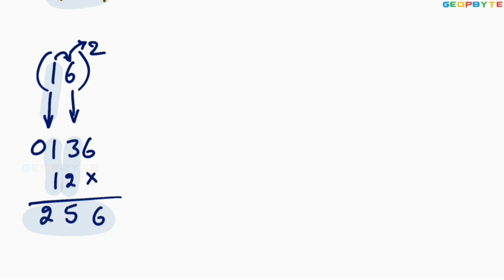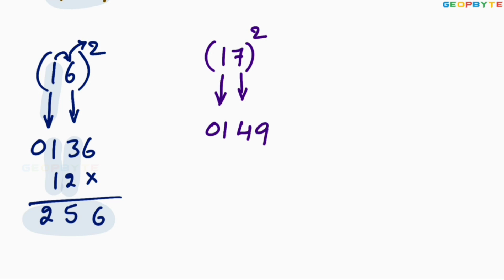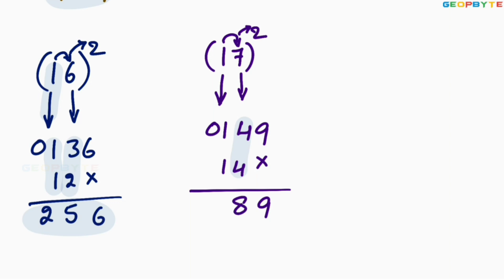Similarly, 17 square: 1 square is 01. 7 square is 49. Then multiply 1 with 7: 1 into 7 is 7. 7 multiplied by 2 is 14. Leave the first space, write 14. Add these two values: 9, 4 plus 4 is 8, 1 plus 1 is 2. Therefore, 17 square is equal to 289.